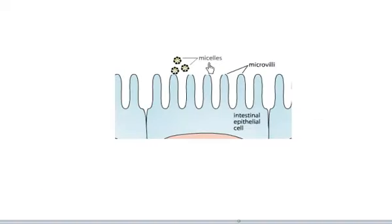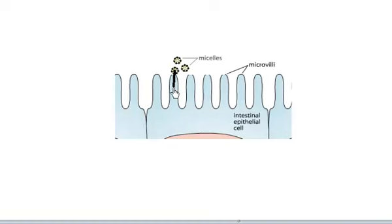Here is a large-scale view of that interaction. This is the micelle, this is the brush border of the intestine, here is the lumen of the intestine, and here is the epithelial cell. They interact here, and as soon as that interaction occurs, fatty acids enter the cell. This over here is the nucleus.